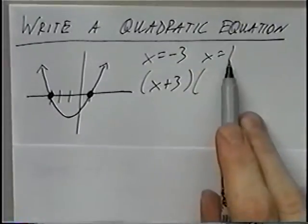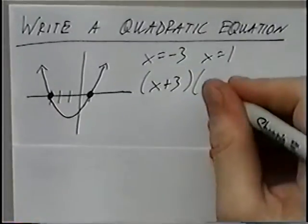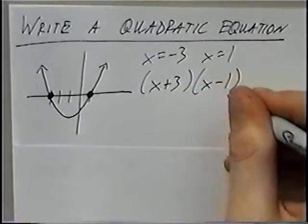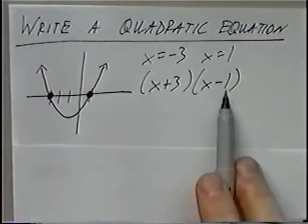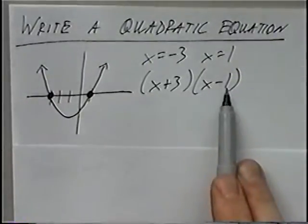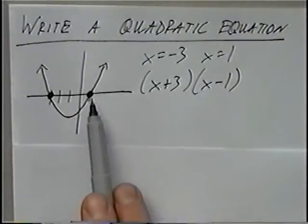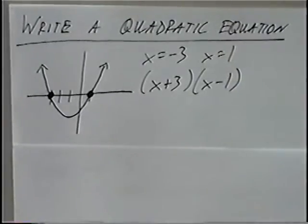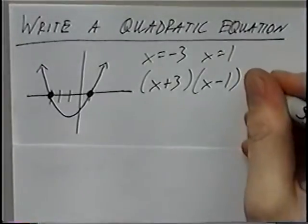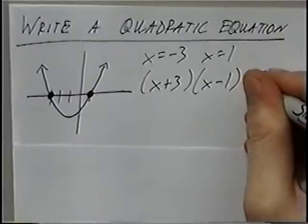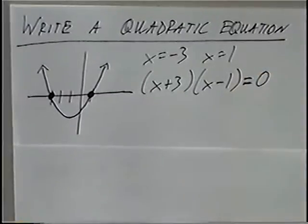For the second value of positive 1, we do the opposite of positive 1, giving us x minus 1. That will again give us a value of 0, which is a solution or root for the quadratic equation. We set this equal to 0 for the quadratic equation.